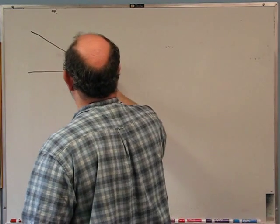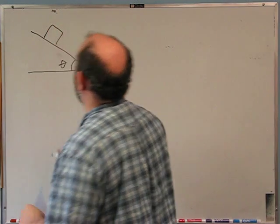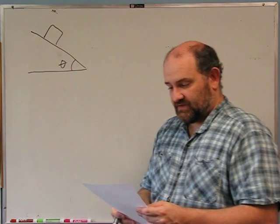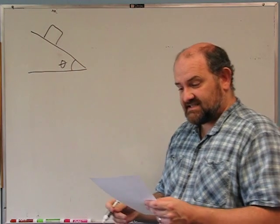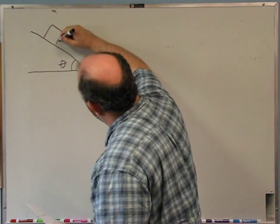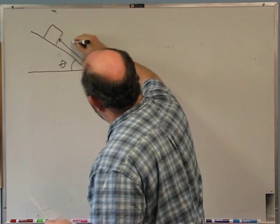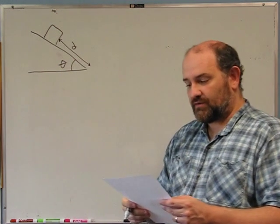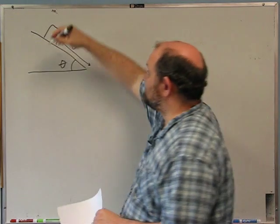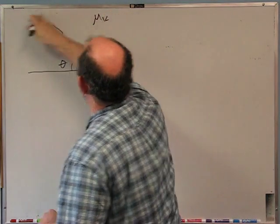This will be the first of two videos that focuses primarily on energy. The first question: a block slides down a sloped surface at an angle of theta. It starts at rest at distance d up the slope from the bottom — that means that distance is d. The coefficient of kinetic friction between the block and the surface is μk.